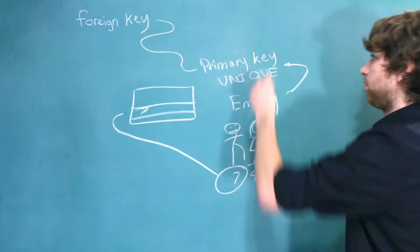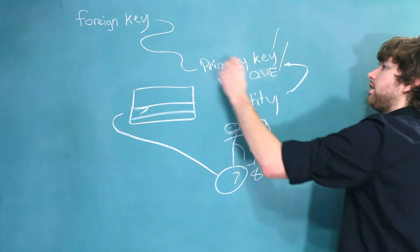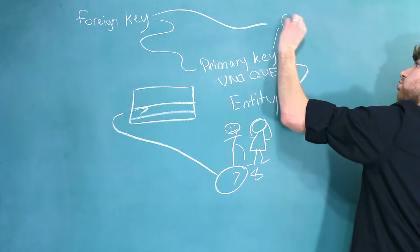All of these rules, including primary key, unique, and foreign key, these are all known as constraints.